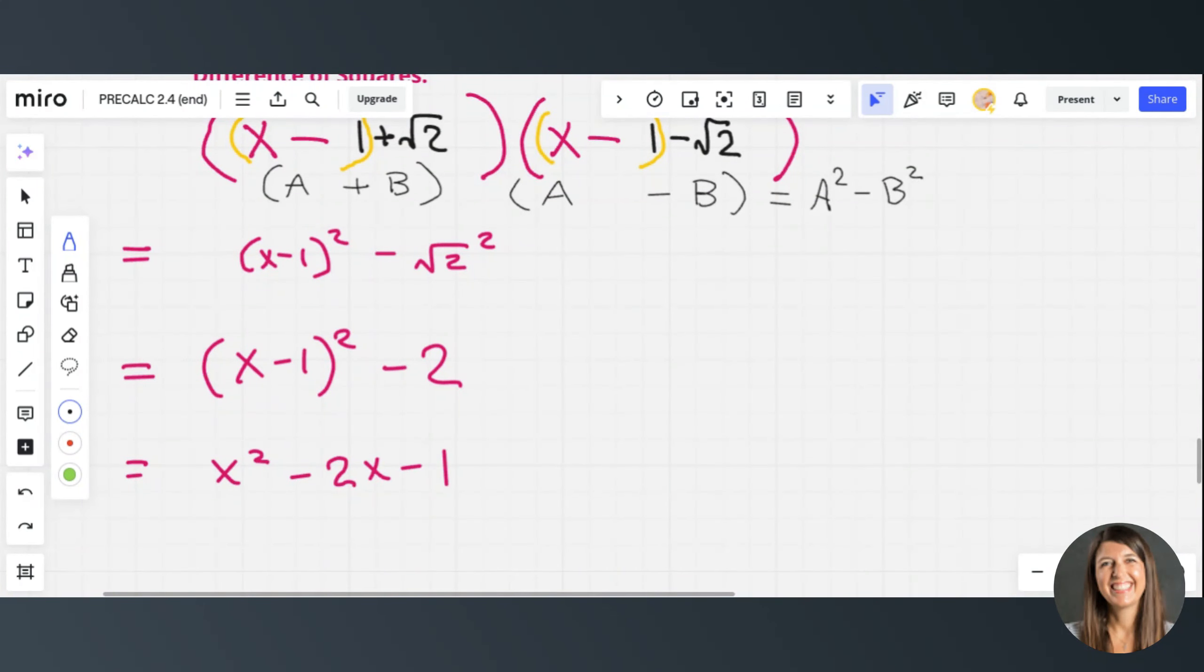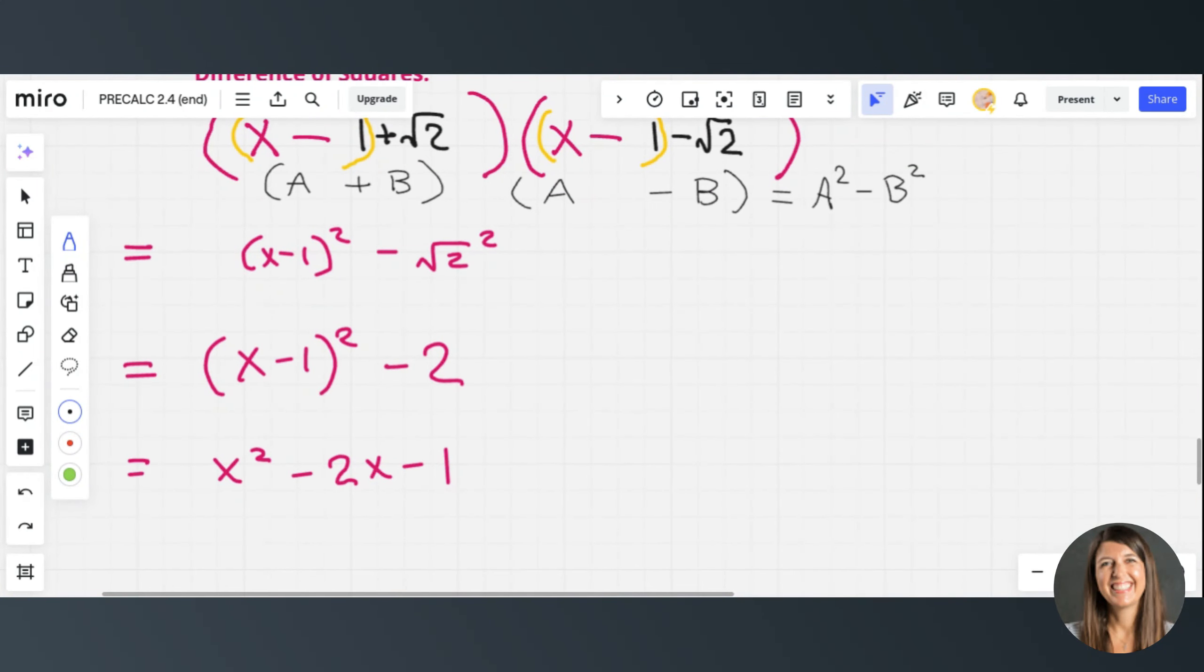And then I'm going to FOIL the x minus 1 term. So on the side, I've got to do x minus 1, x minus 1. That equals x squared minus 2x plus 1.